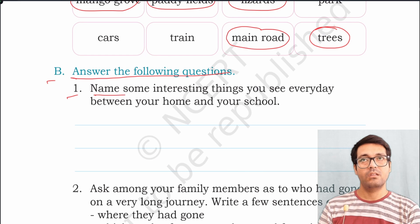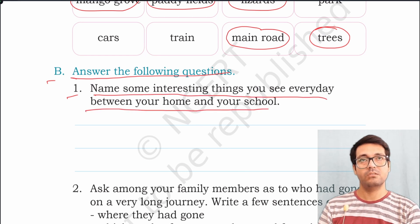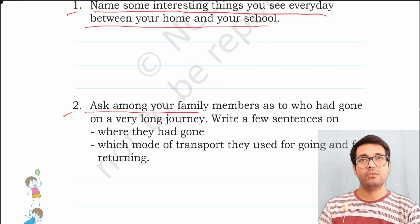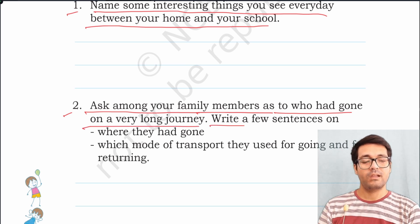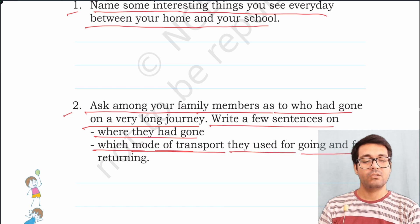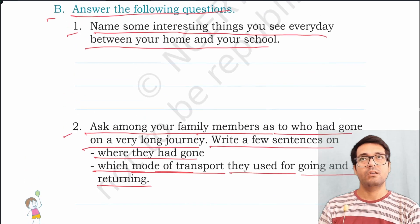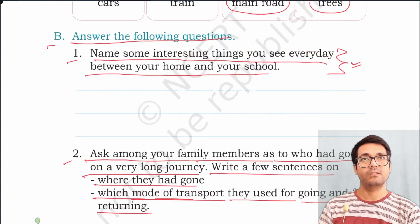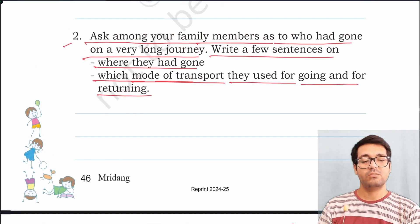B: Answer the following questions. 1. Name some interesting things you see every day between your home and your school. You have to name the interesting things that you see between your home and school. 2. Ask a family member who has gone on a very long journey. Write a few sentences about where they went, which mode of transport they used for going, and which mode they used for returning.